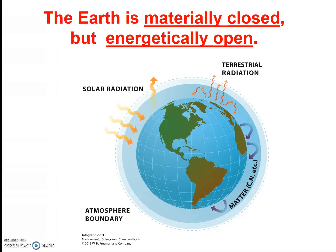In contrast, an open system allows flow in and out of the system. For example, our Earth's system is a closed system for matter, but an open system for energy. The Sun's energy is continuously entering the Earth's system, and heat energy is continuously leaving the Earth's system.